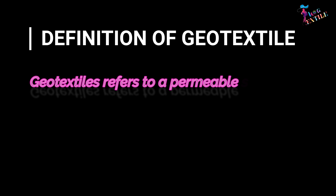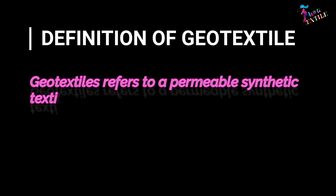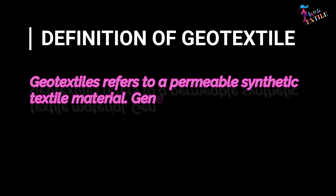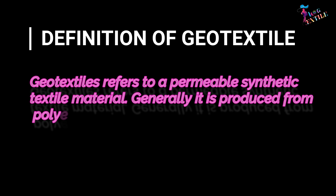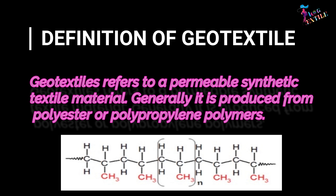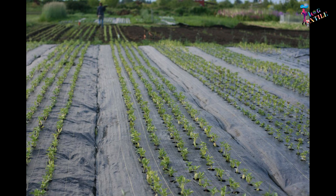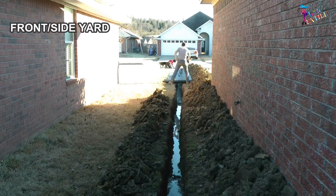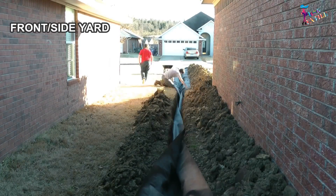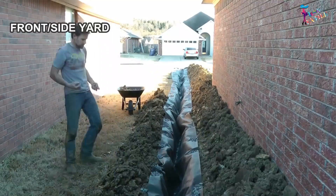Geotextile refers to a permeable synthetic textile material. Generally, it is produced from polyester or polypropylene polymers. Geotextiles are used to increase soil stability, provide erosion control, or aid in drainage.